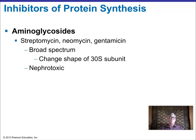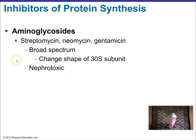Aminoglycosides — streptomycin, neomycin, and gentamicin — are broad-spectrum protein synthesis inhibitors that interfere with the 30S subunit. However, they are hard on the kidneys. The usual strategy is to avoid long-term treatment to minimize nephrotoxicity. Nephron, the functional unit of the kidneys that makes urine, is what 'nephro-toxicity' refers to.